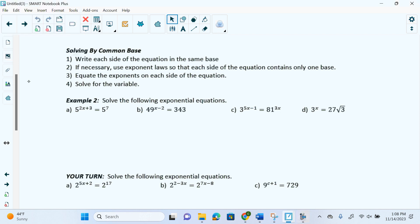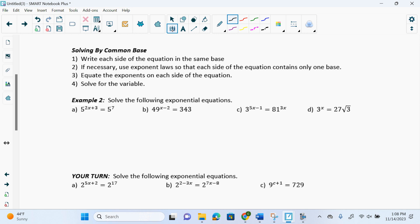For example, if I had a to the x, this would be the base, and this would be the exponent, which we were talking about in more detail in grade 10. So it says write each side of the equation in the same base. If necessary, use exponent laws so that each side of the equation contains only one base. So if you have more than one base on the left or the right, you make sure you only have one. Equate the exponents on each side of the equation and then solve for the variable.